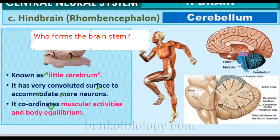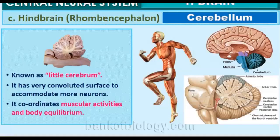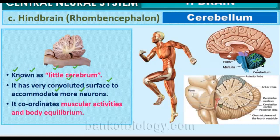Let us discuss the cerebellum. Cerebellum is the first part of the rhombencephalon — the scientific name for the hindbrain. It is also known as the little cerebrum. It has a very highly convoluted surface to accommodate more neurons. The surface is very deeply folded so that more neurons can be accommodated. It coordinates muscular activities and body equilibrium.